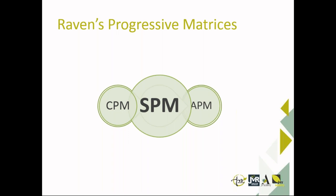The Ravens Progressive Matrices consists of three tests: the Colour Progressive Matrices (CPM), the Standard Progressive Matrices (SPM), and the Advanced Progressive Matrices (APM). Because we are looking at the youth context and our latest addition — the adolescent norms for South Africa — I will be focusing on the SPM only.